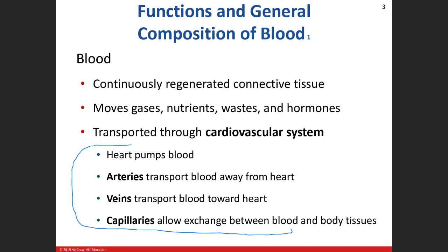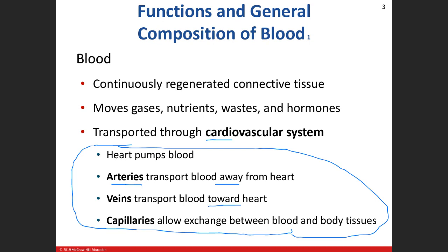This right here is basically everything in this chapter in four bullet points. We call the bloodstream the cardiovascular system — cardio referring to the heart, vascular referring to the blood vessels. The heart pumps the blood and the blood moves throughout the body. Any blood vessel that leads away from the heart is going to be an artery — artery away. Veins are going to bring blood toward the heart. A lot of people confuse that with arteries carrying oxygenated blood — no, not always. Arteries carry blood away from the heart; veins bring it towards.